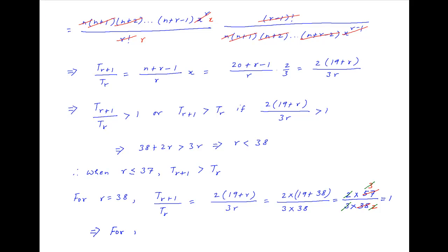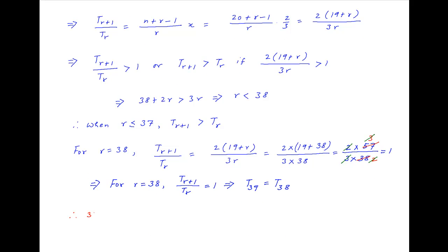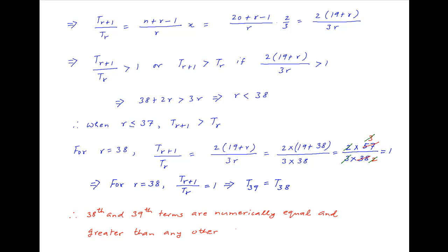Therefore, when r is equal to 38, T(r+1) upon T(r) is equal to 1, or in other words, T39 is equal to T38. Therefore, the 38th and 39th terms in the expansion of the given expression are numerically equal, and these terms are numerically greater than any other term in the expansion, which is the required answer.